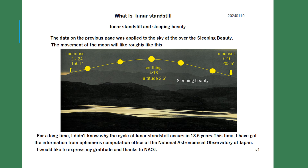The data from the previous page was applied to the sky over the Sleeping Beauty mountain. The moon will look roughly like this. For a long time I didn't know why the cycle of lunar standstill occurs in 18.6 years. This time I obtained information from the Ephemeris Computation Office of the National Astronomical Observatory of Japan. I would like to express my gratitude and thanks to NAOJ.